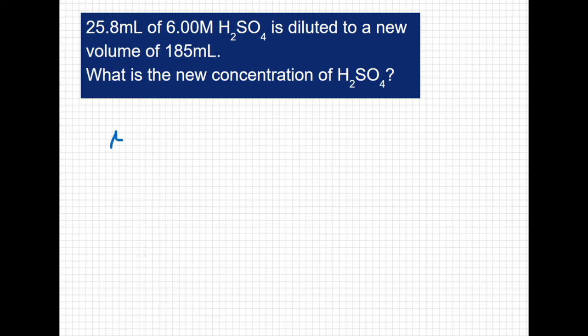The text shows us that M1V1 is going to equal M2V2. And what we're looking for is a new concentration. We're looking for molarity 2. So if I divide both sides by V2, I get M1V1 all over V2 is going to equal M2.